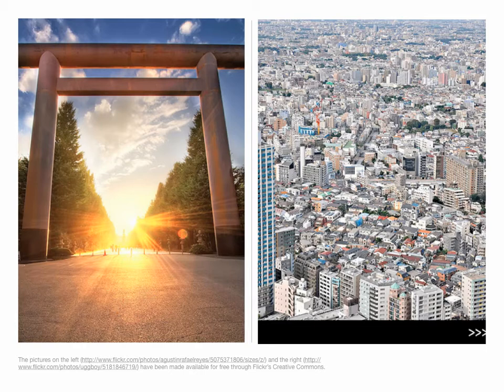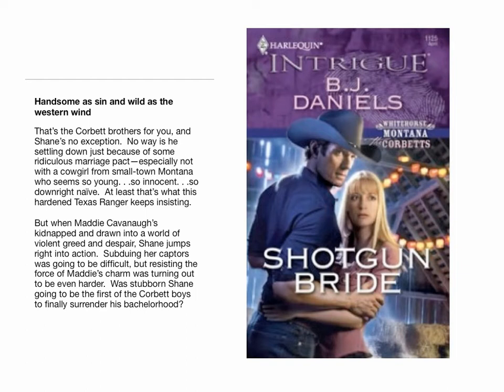I had to summarize and sell the book in about 120 words. Here is what I wound up writing: "Handsome as sin and wild as the western wind, that's the Corbett brothers for you, and Shane's no exception. No way is he settling down just because of some ridiculous marriage pact, especially not with a cowgirl from small-town Montana who seems so young, so innocent, so downright naive. At least that's what this hardened Texas ranger keeps insisting. But when Maddie Cavanaugh is kidnapped and drawn into a world of violent greed and despair, Shane jumps right into action. Subduing her captors was going to be difficult, but resisting the force of Maddie's charm was turning out to be even harder. Was stubborn Shane going to be the first of the Corbett boys to finally surrender his bachelorhood?"